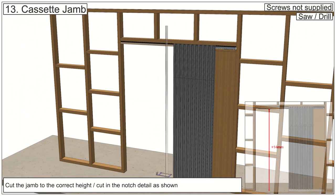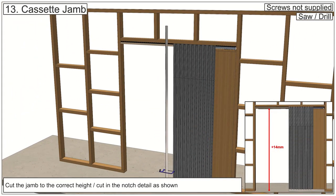Cut the jamb to the correct height from the floor to the underside of the track packers plus 14mm.